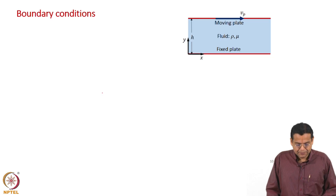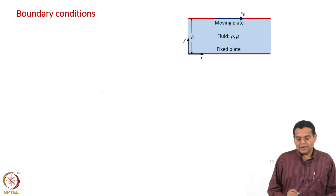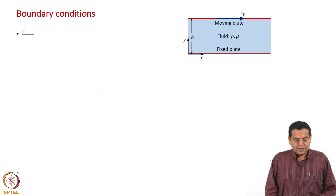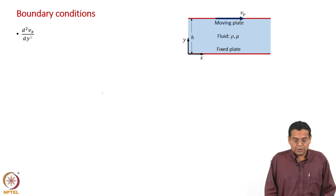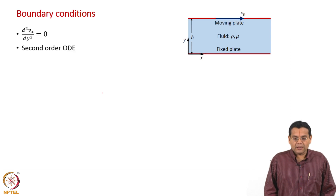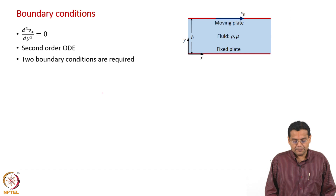What we will do is discuss the boundary conditions. We have a second order ordinary differential equation, and to solve that we require two boundary conditions. That is what we will discuss now. Second order ODE — two boundary conditions are required.